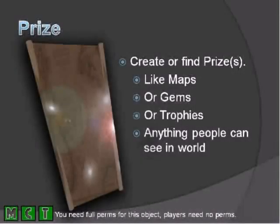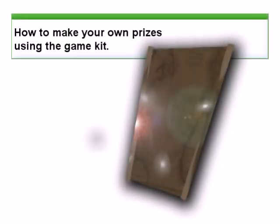The fifth component of the game kit is a prize. Prizes are awarded each time a player passes a puzzle board. You can make any virtual object into a prize. Here's how.